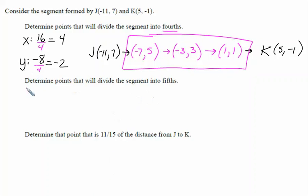Now we want to go into fifths. Again, we're going to take the change in x, which we saw was going to the right 16. And then the y, we're going down 8. But now we're splitting into fifths. So we're going to divide each of those by 5, giving improper fractions.